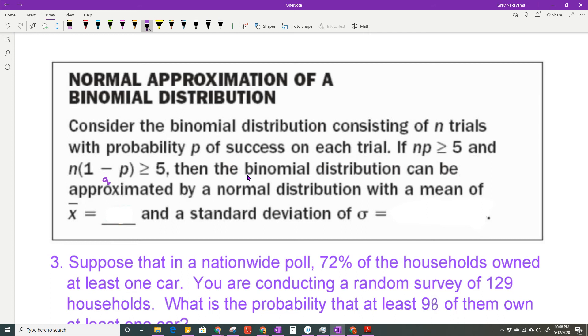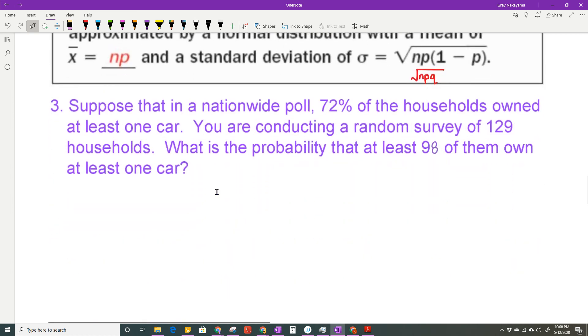Then the binomial distribution can be approximated by normal distribution as long as you calculate the mean, which is n times P. And a standard deviation, which is written like this. I'm going to actually simplify it and also write it like this, nPQ, because Q is 1 minus P. It's a little bit easier to remember. So look at this problem.